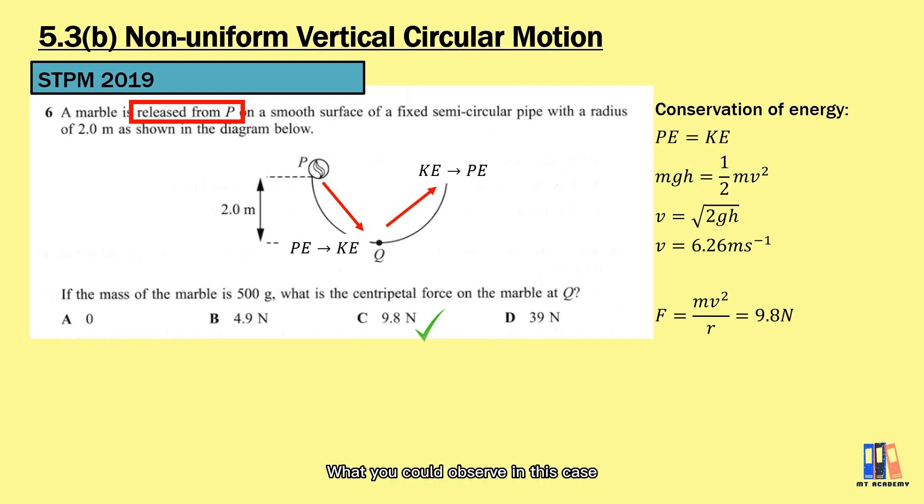So what you could observe in this case is that the linear velocity is non-uniform. Centipetal force is also not constant. Unlike in the previous case, the tension in the string is adjusted so the object can maintain its linear speed.